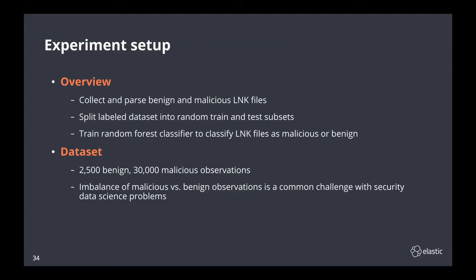Here's some information about the experiment we set up using the dataset and training a random forest classifier to identify links as malicious or benign. The dataset consisted of around 2,500 benign and 30,000 parsed and labeled malicious link files. This is quite an imbalance, but it's a common challenge when attempting to solve security problems using data science. The extracted features should be descriptive enough to separate malicious from benign samples. Let's move on to talk about how we trained the classifier and what the results look like.